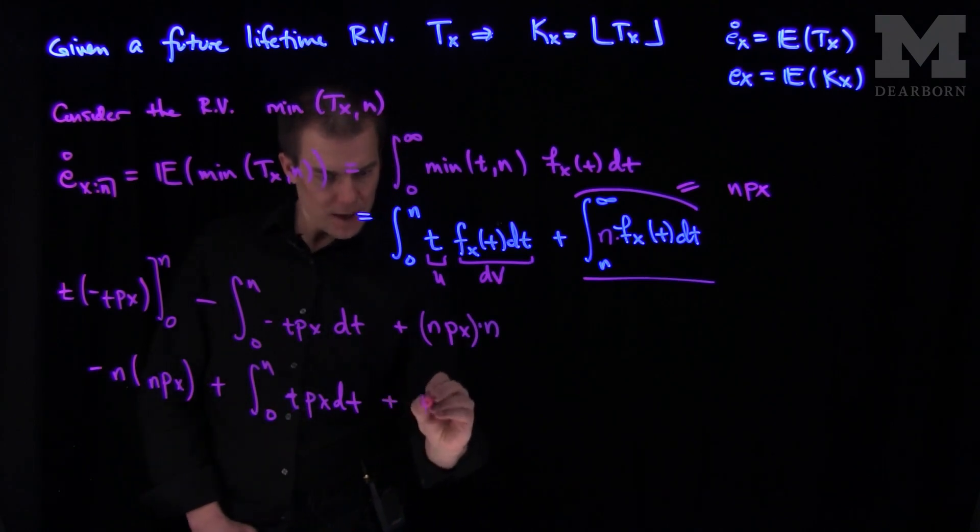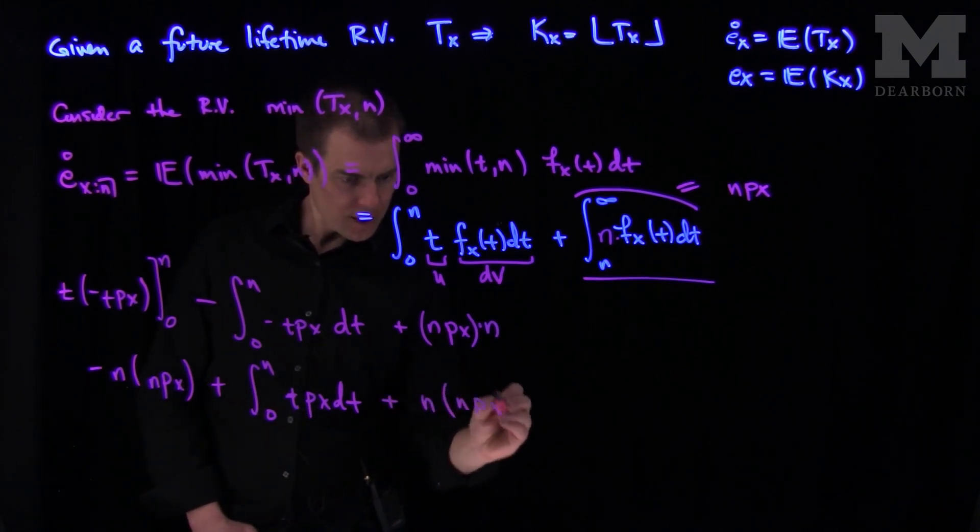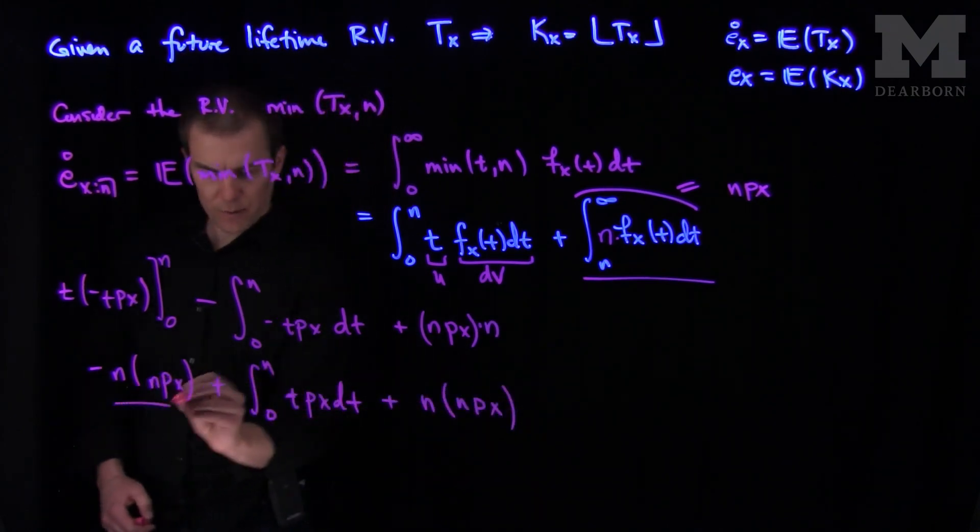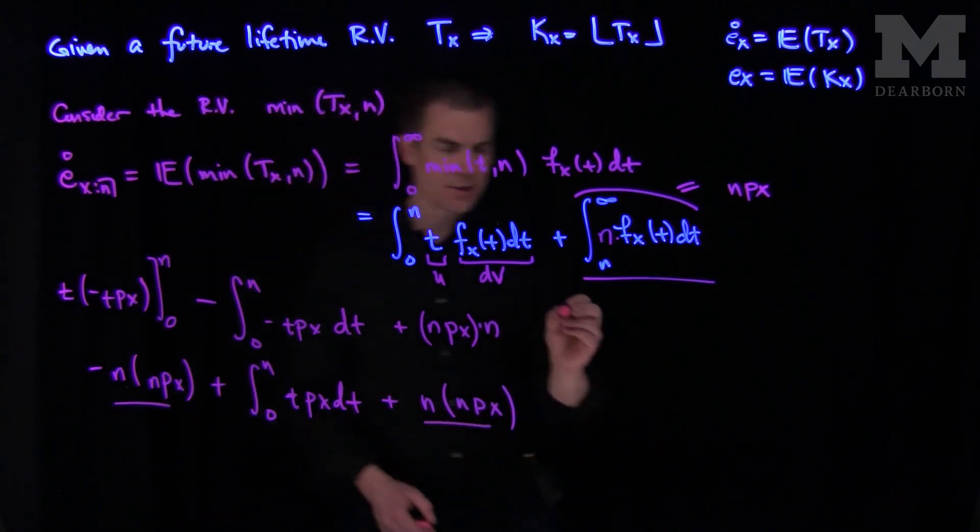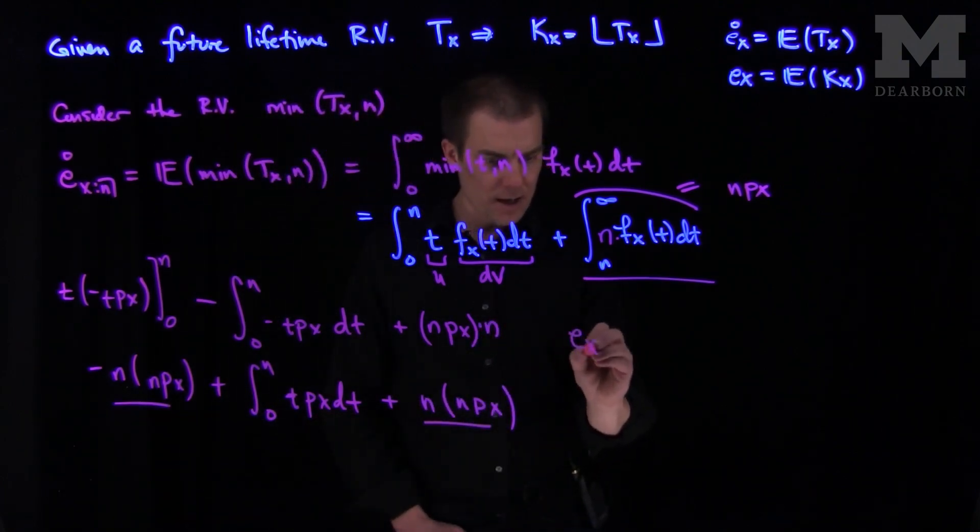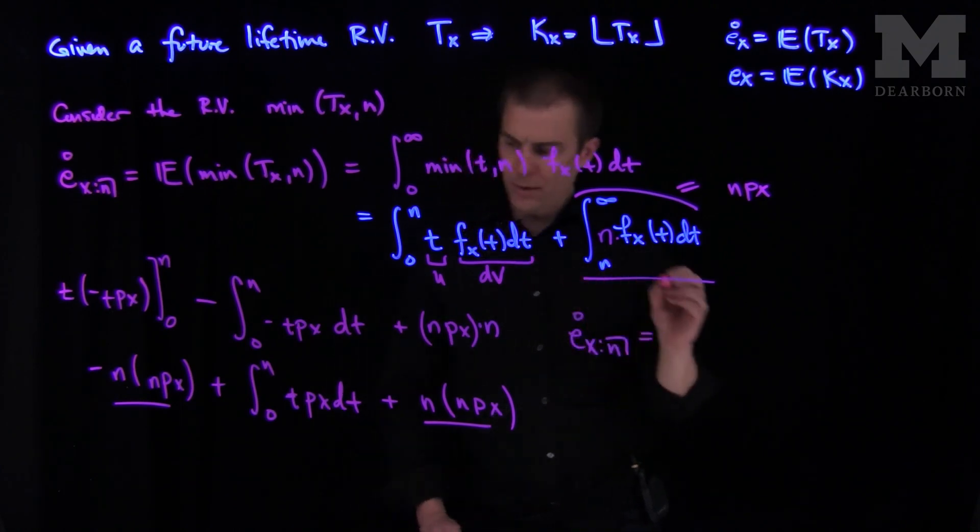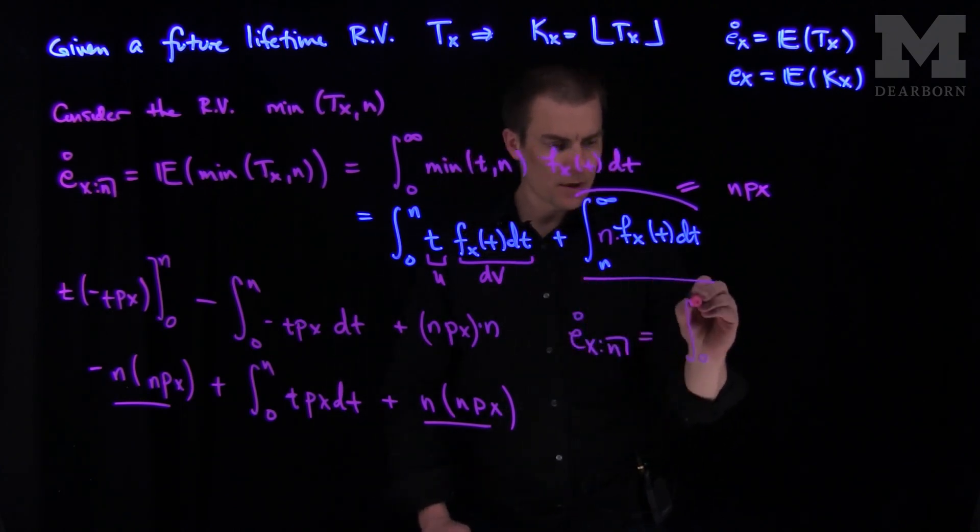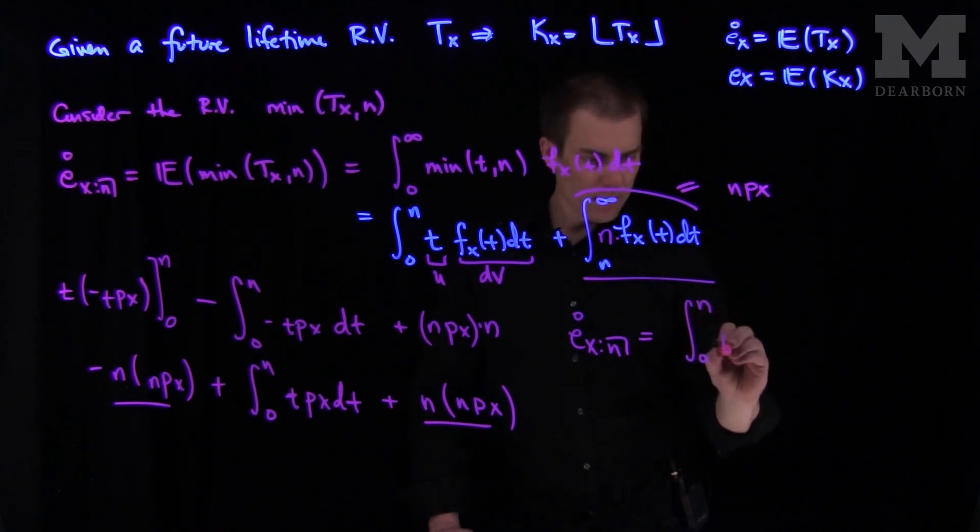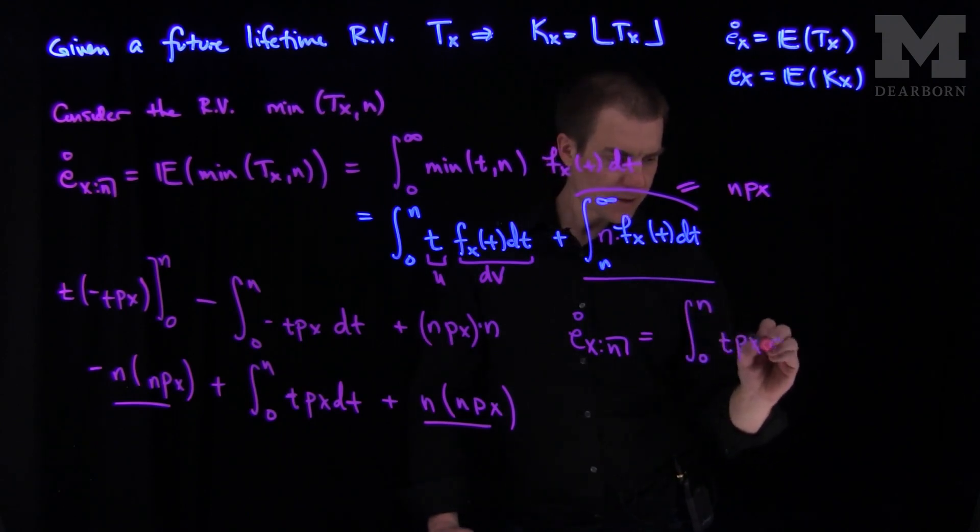So we put an n right there and this will turn into a positive n over here. And then we'll have a plus n times n px. And now this term over here will cancel with this term over here. And so we see we have this nice formula that ex n circle is equal to the integral from zero up to n of t px dt.